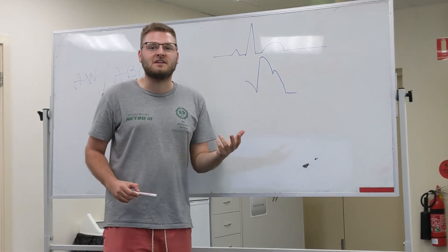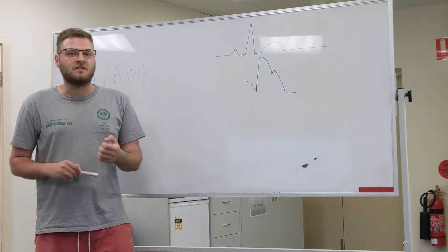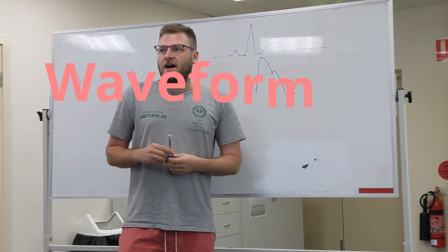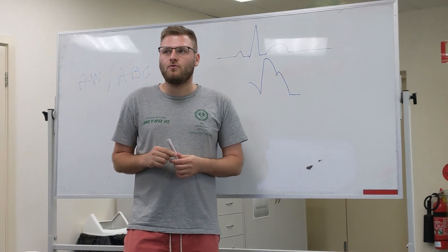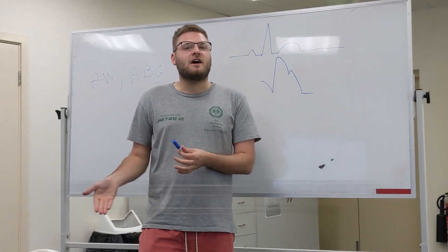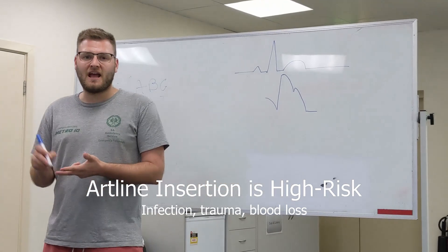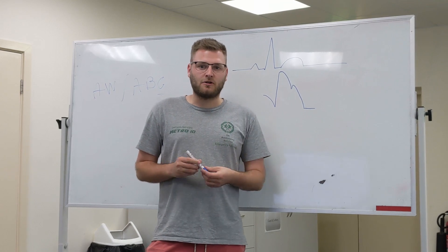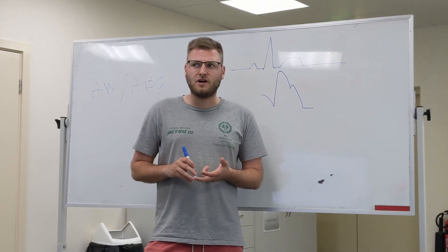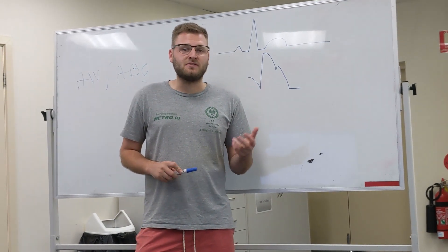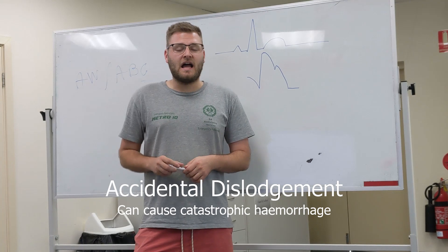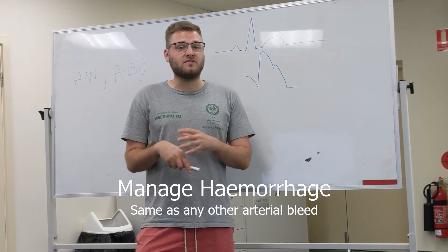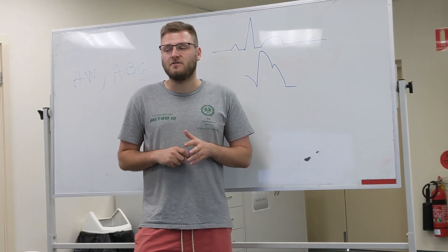The peak systolic pressure should correspond — offset by a couple of milliseconds — with the QRS complex, which is indicative of ventricular systole. The arterial line insertion itself is high risk for both infection and hemorrhage. Accidental removal can result in catastrophic hemorrhage, which would need to be managed like any other arterial bleed — with direct pressure, or even a tourniquet if direct pressure does not suffice.